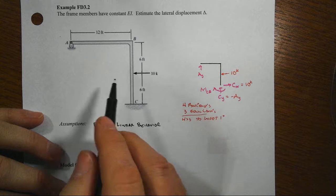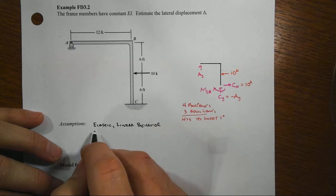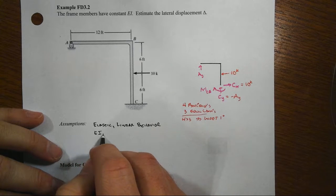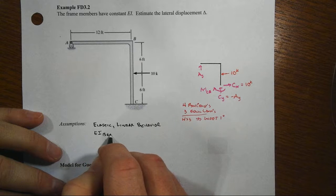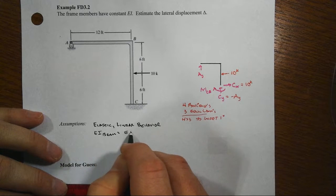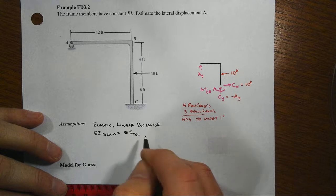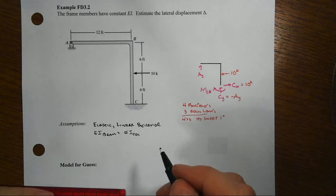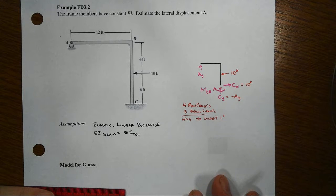And it's already been stated, but not only do the frame members have constant EI, but that we're going to assume that EI of the beam is going to equal EI of the column. Don't know if that matters or not, but we're going to make that assumption right off the bat.